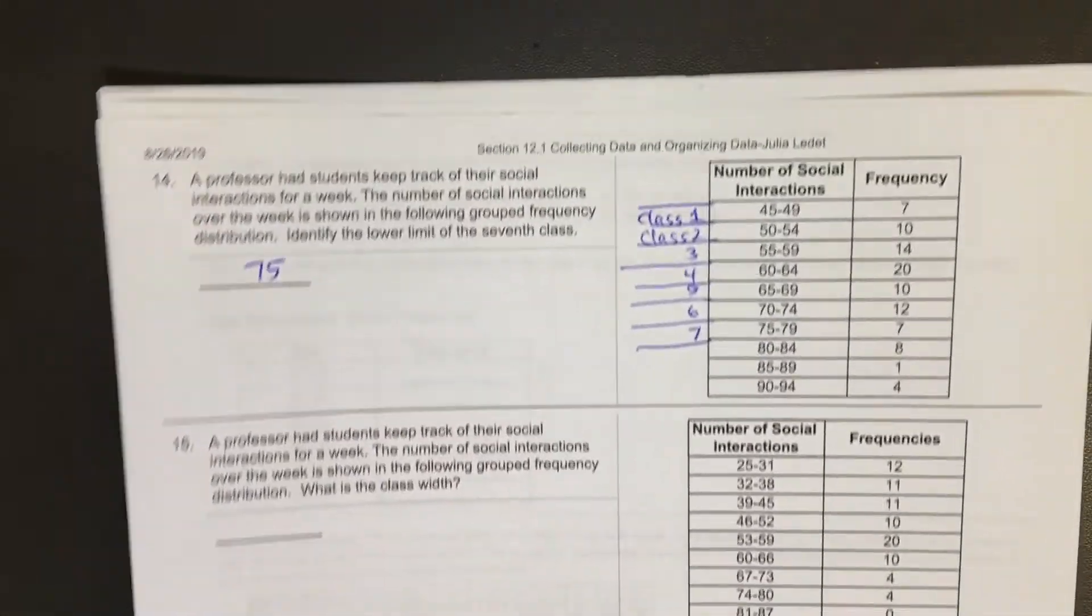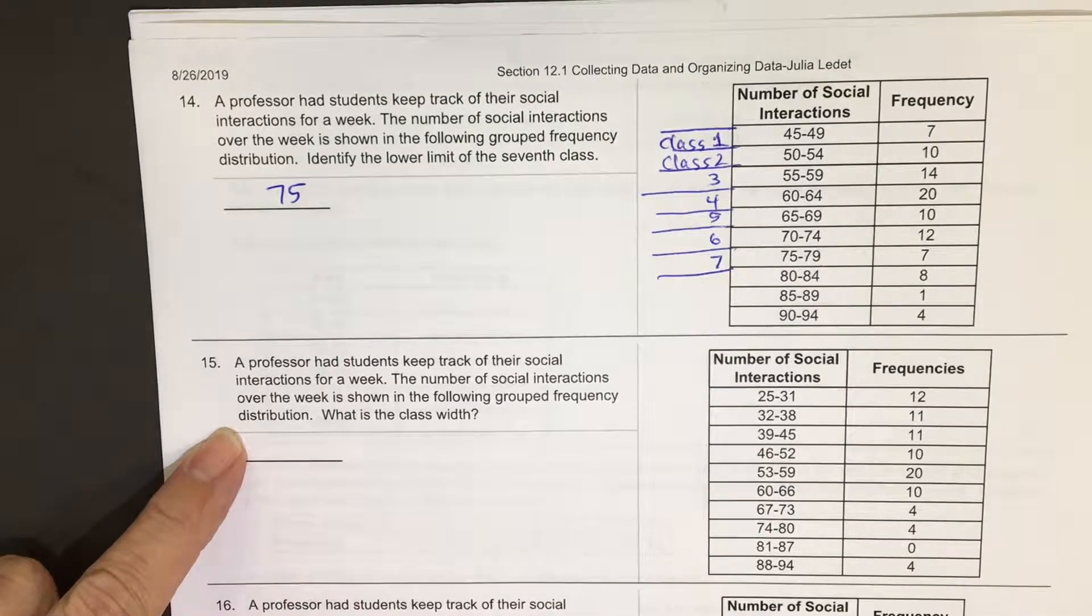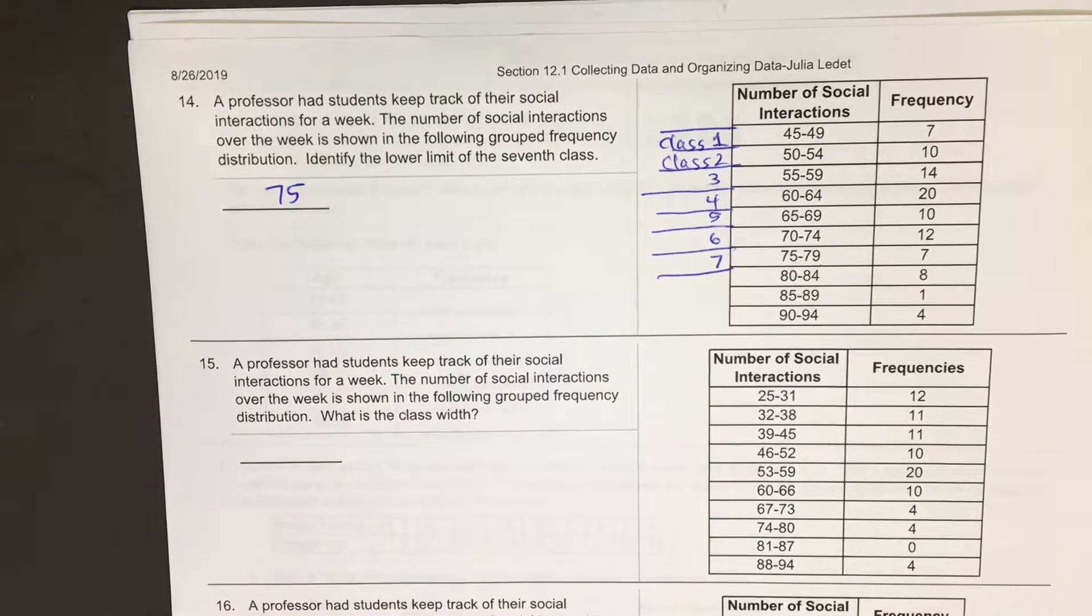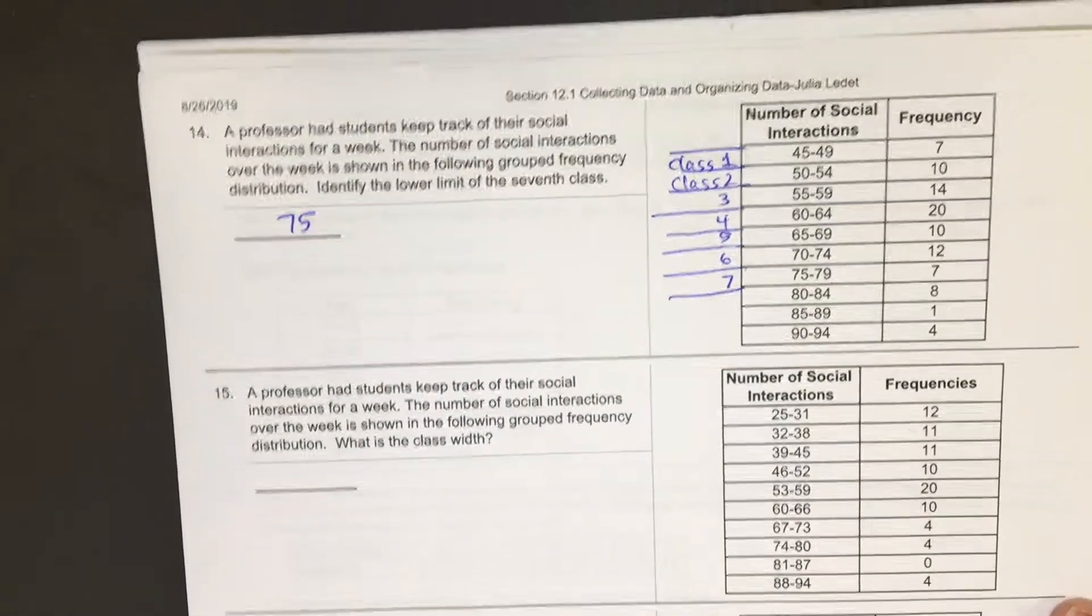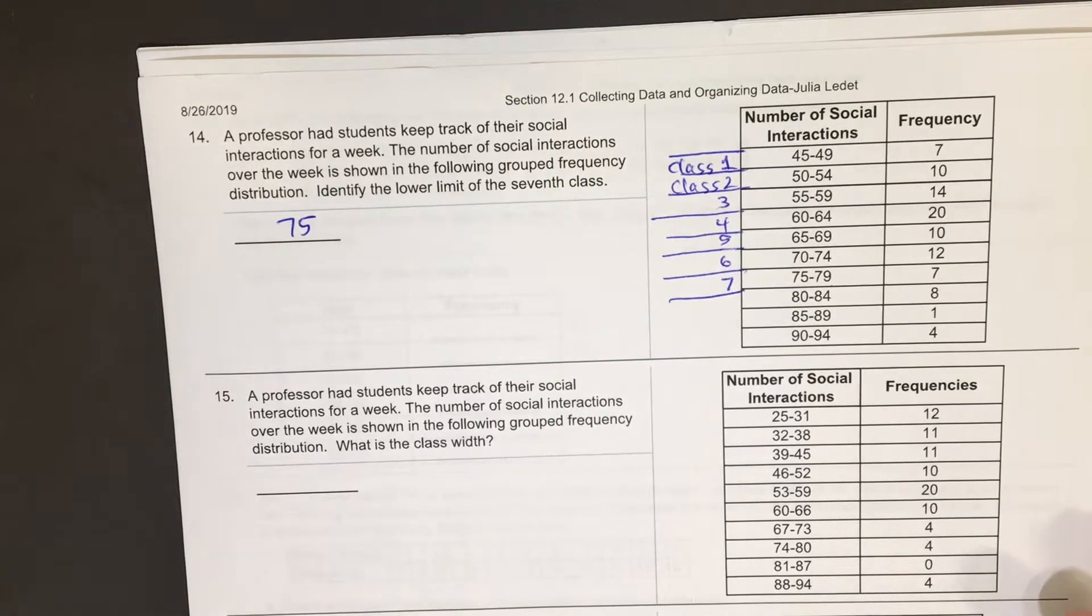Number 15, the professor had students keep track of their social interactions for a week. The number of social interactions over the week is shown in the following group frequency distribution. What is the class width?